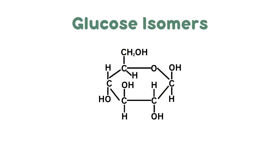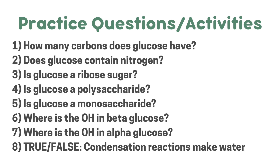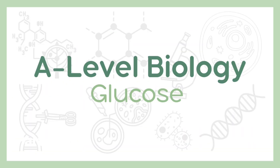Without looking back, can you tell me which isomer this is? And it's beta glucose. That's it for the contents of this video. Test your knowledge by doing these practice questions and activities — and here are the answers. I really do hope you found it useful. Please give it a like if you did and consider subscribing to our channel. Make sure to check out our channel because we might post some content regarding your other A-levels. Bye-bye.